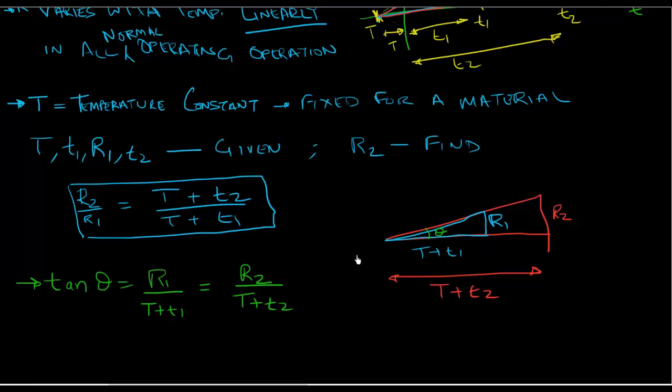And they are both tan theta. So these two are equal. And from this we get R2 over R1 is equal to T plus T2 over T plus T1. So there you go guys. That's the relationship between resistance and temperature.